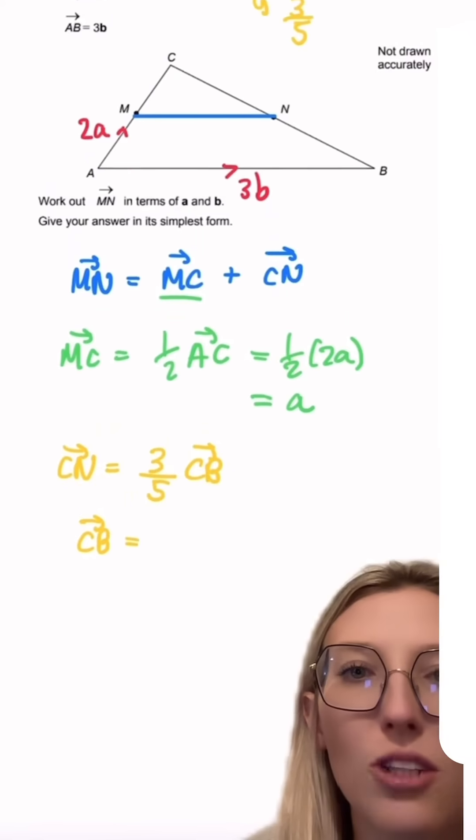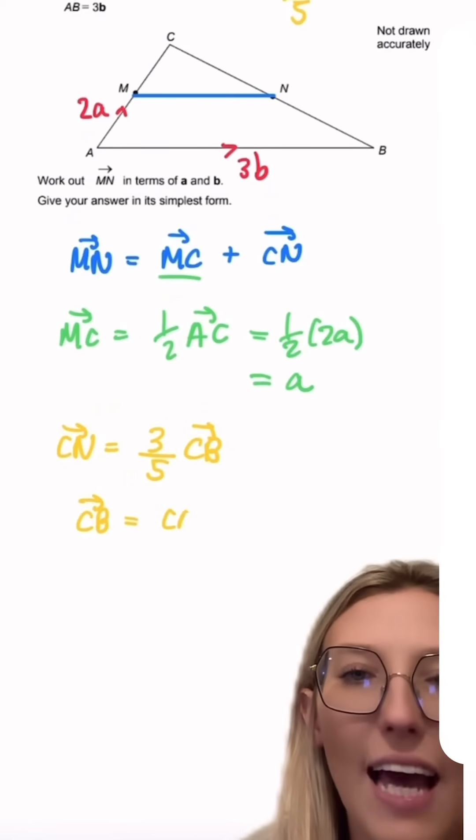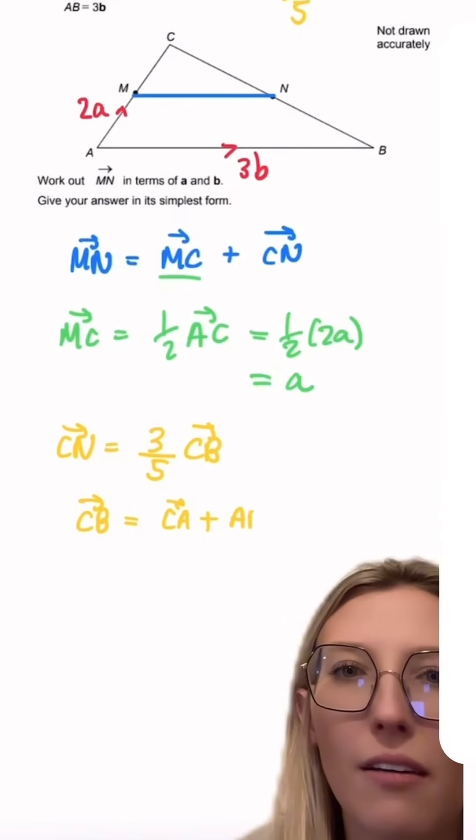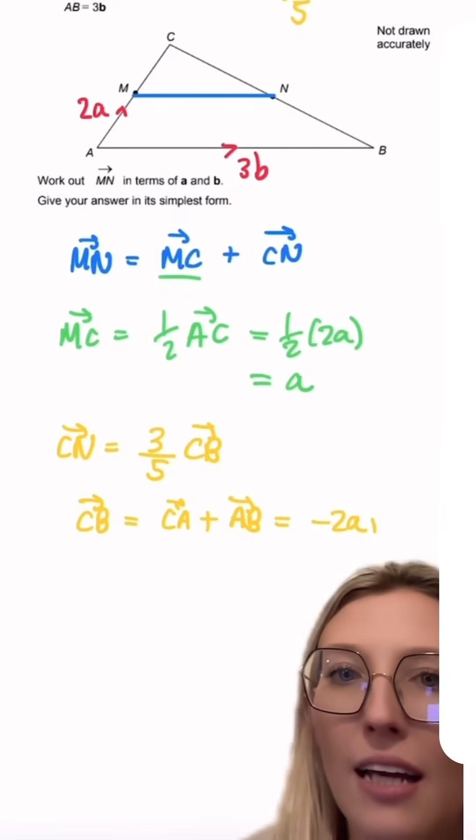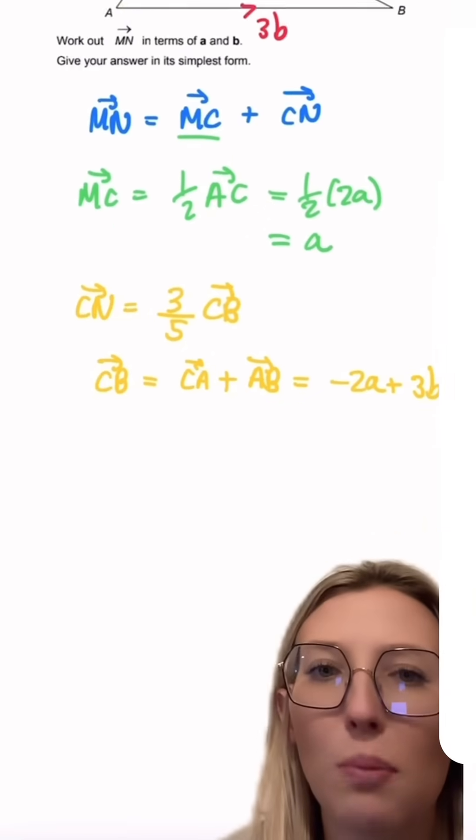Now let's go ahead and find CB. We can do CB by doing CA add AB. We know CA is just going to be minus 2a and AB is just going to be 3b.